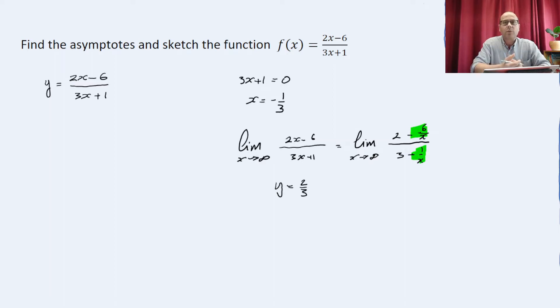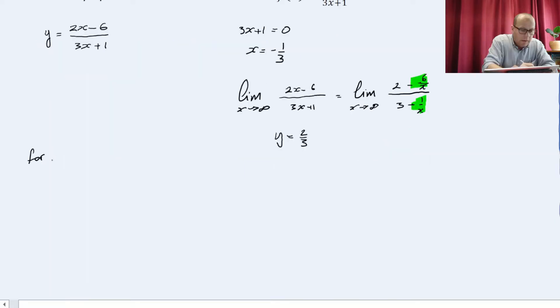To sketch the graph, I need to decide on the orientation of the graph. x equals 0, y is equal to minus 6. y is equal to 0, x equals 3. So now, let's sketch the graph.